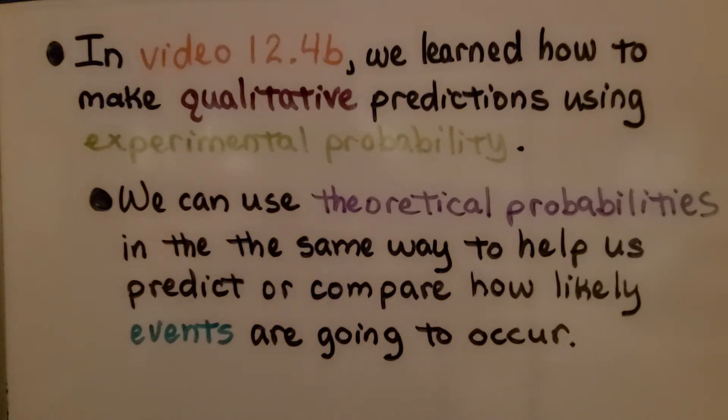In Video 12.4b, we learned how to make qualitative predictions using experimental probability. We can use theoretical probabilities in the same way to help us predict or compare how likely events are going to occur.